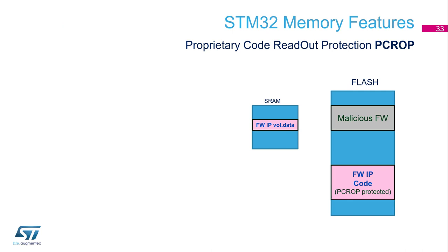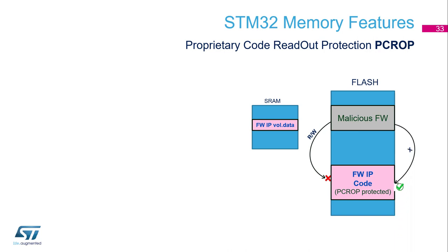To summarize what happens on the flash: we have our firmware IP code — some valuable firmware we want to protect — which has been compiled to remove all data access and then protected with PCROP. In SRAM, this firmware will need volatile data, and unfortunately SRAM is not protected by PCROP. Imagine a malicious firmware: it cannot read or write the protected firmware IP, it cannot disassemble it, but it can launch it and observe the volatile data present in SRAM. This is something to keep in mind during development.